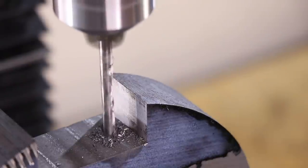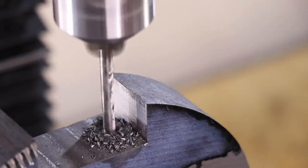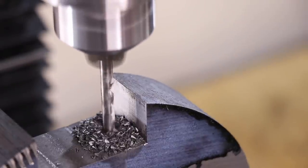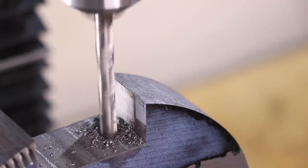With the slot cut, I went ahead and drilled three holes, which will eventually become the mounting holes to bolt the vertical support to the base.